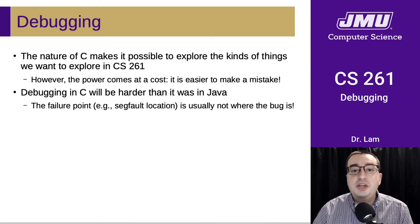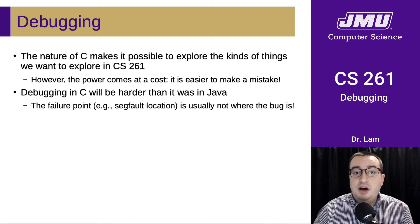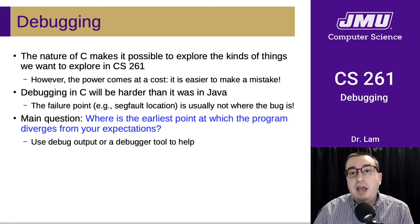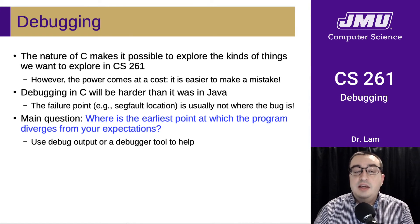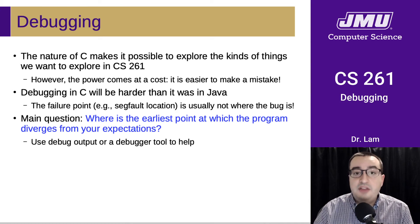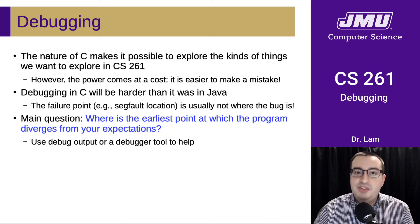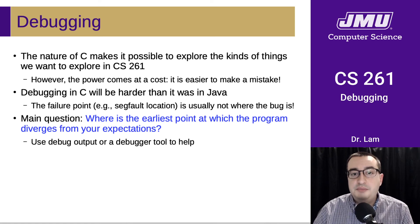Debugging in C is going to be harder than it was in Java. The failure point is almost always not where the actual bug or defect is. As you debug, the main question you're going to be asking is: where is the earliest point at which the program diverges from your expectations? This is easiest to do by working backwards — start from what is broken, ask why that is happening, and either that will show you where the defect is, or it will raise more questions requiring you to go further back.